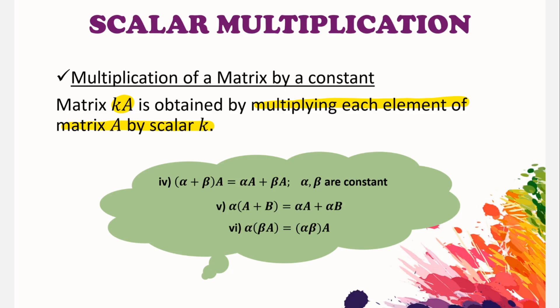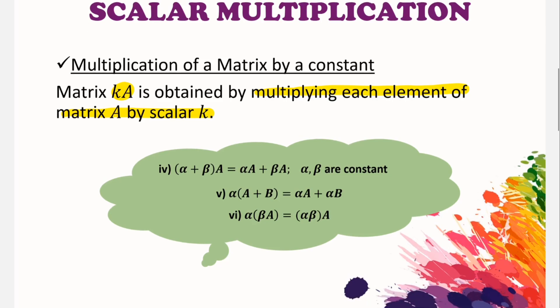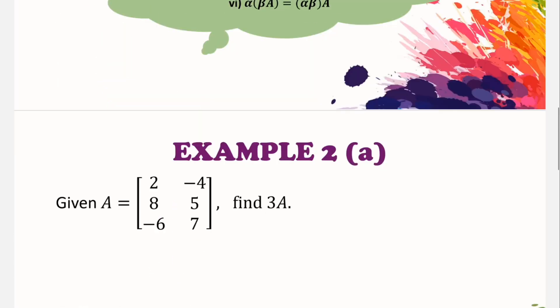So in this green bubble, it is actually the properties that is related to the scalar multiplication. So you can look at these three properties from your notes as well.